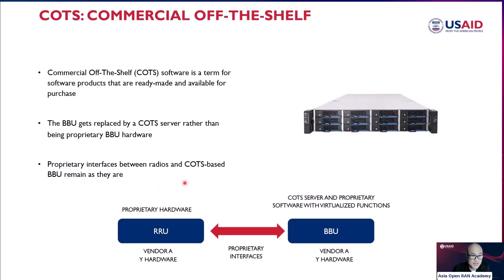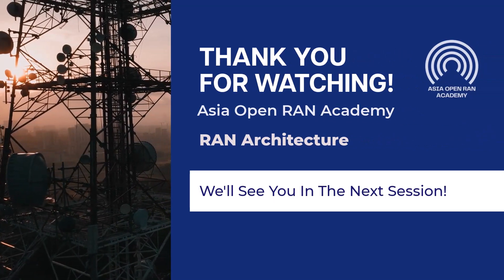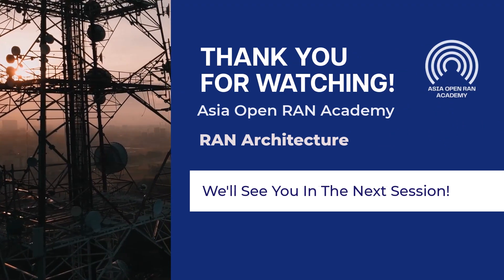The proprietary interfaces between radios and COTS base remain, but in Open RAN you can connect different vendors' RRU to different vendors' BBU — that's the flexibility of Open RAN. In some test applications of Open RAN systems, you can see separate BBUs and different RRUs being tested for interoperability with each other. Sometimes there's one RRU and you connect different CUs to check interoperability between vendors.